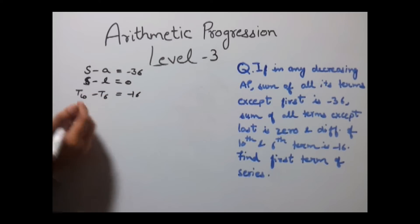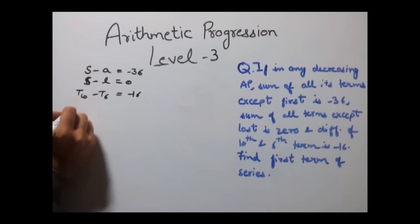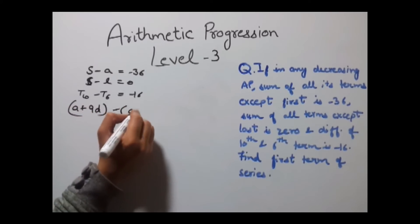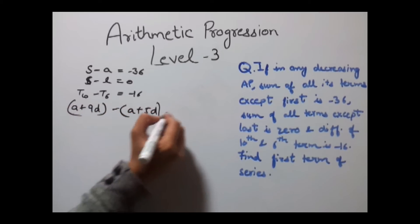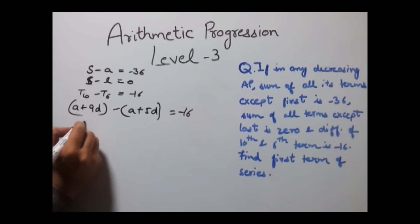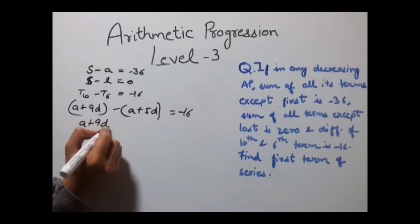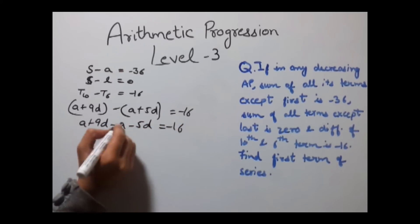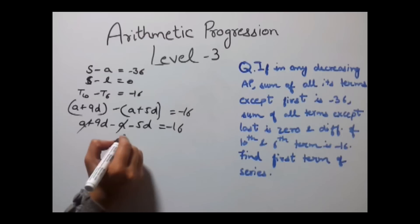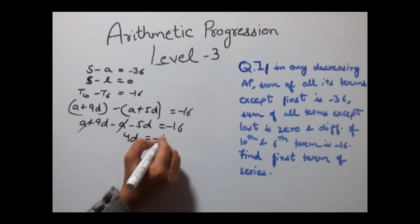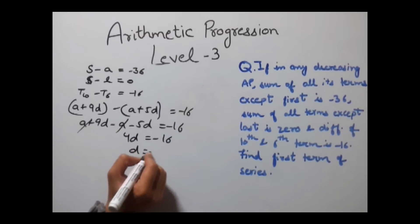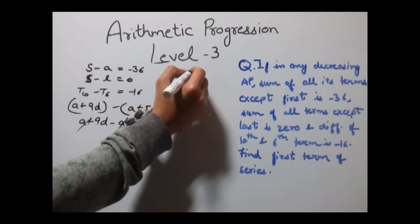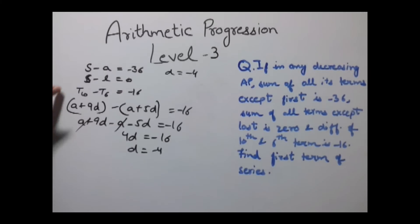Let's first solve T10 − T6 = −16: (a + 9d) − (a + 5d) = −16, which gives 4d = −16, so d = −4.